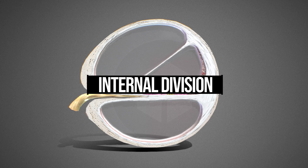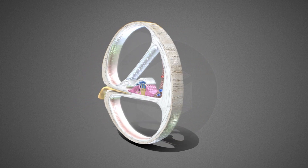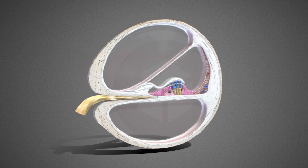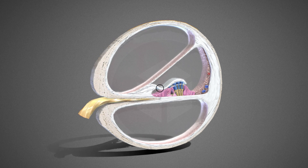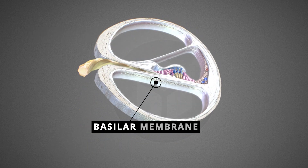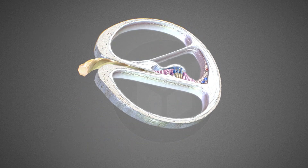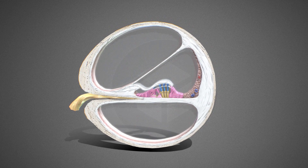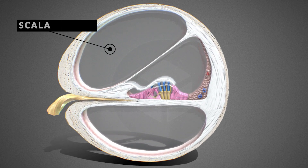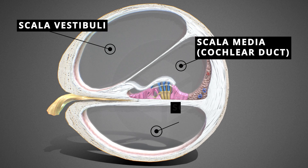Inside, the cochlea is divided along its length by two membranes — Reissner's membrane and the basilar membrane. This division creates three parallel, fluid-filled chambers: the scala vestibuli, scala media (cochlear duct), and scala tympani.